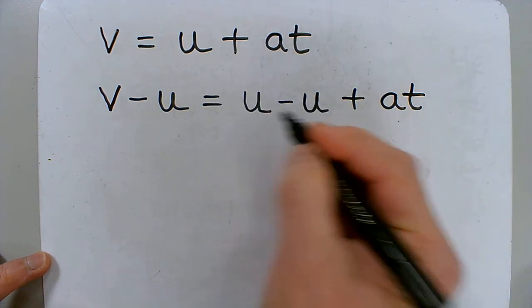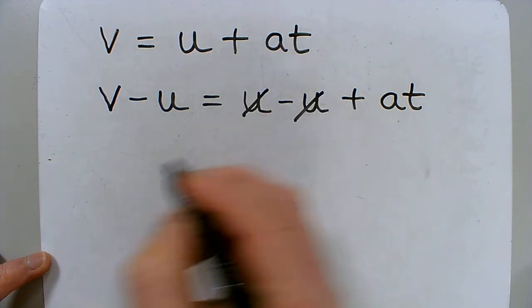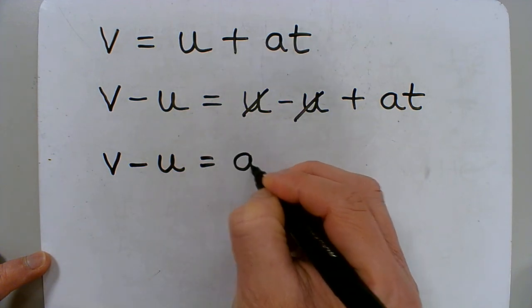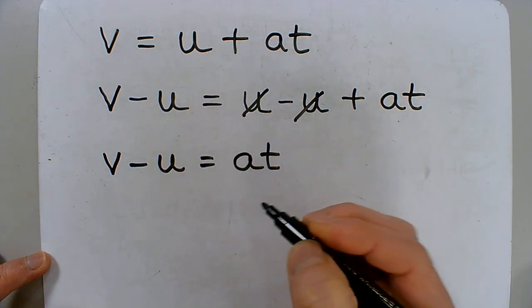And here u minus u is zero. So anything minus the same number is zero. So basically they cancel out. So all that we're left with is v minus u equals at, which is exactly what we had in the previous example.